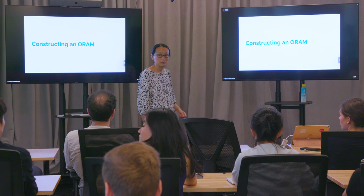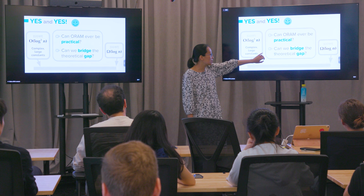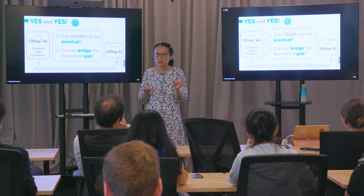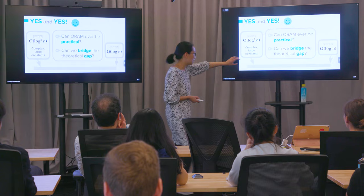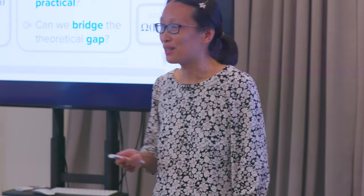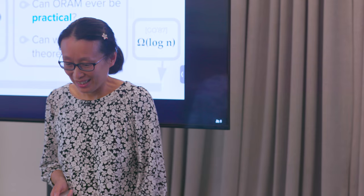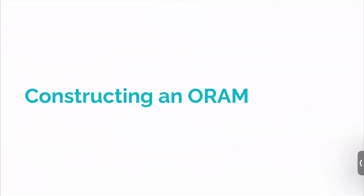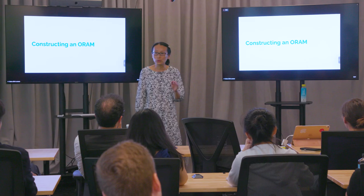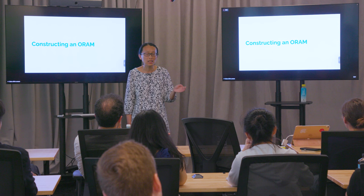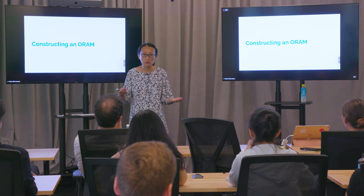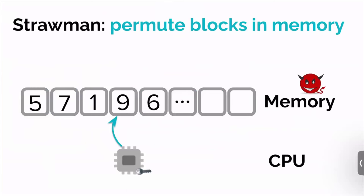The construction I'll describe today has log-squared overhead, but in theory it behaves more like log n in practice. I'm not going to directly tell you Path ORAM — I'll tell you a predecessor called Binary Tree ORAM. This Binary Tree ORAM is a framework for constructing ORAMs, and once you understand the framework, I can describe Path ORAM in just one sentence. This framework completely departs from Goldreich-Ostrovsky's original algorithms.